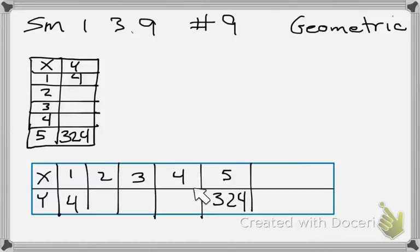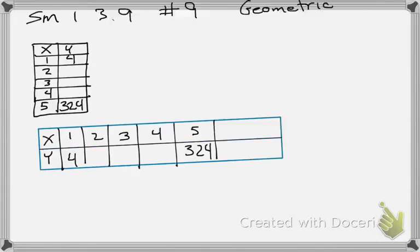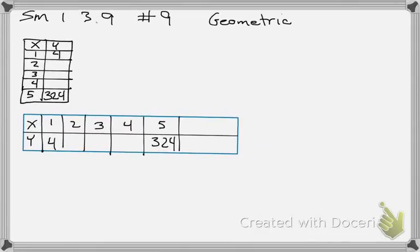We could find the third term by finding the geometric mean. Because this third term is right in the middle of the first and fifth term. Alright, so for the third term, all we'd have to do is find the geometric mean of 4 and 324.